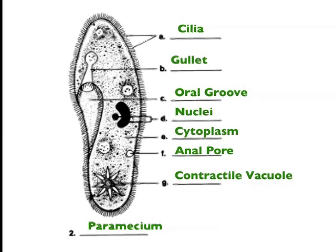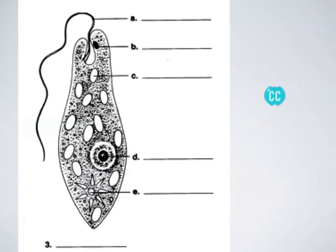So those are the parts of paramecia. Our last group: this protist moves with a flagellum. The one we're looking at is called euglena. Euglena are interesting because they are both autotrophs and heterotrophs — they can do either. They move using a whip-like flagellum.